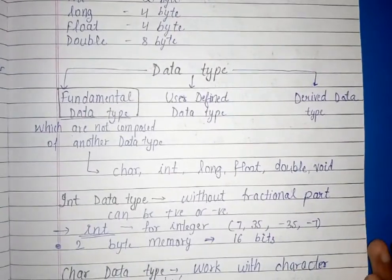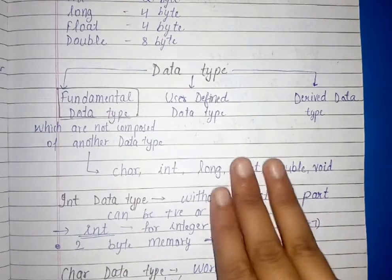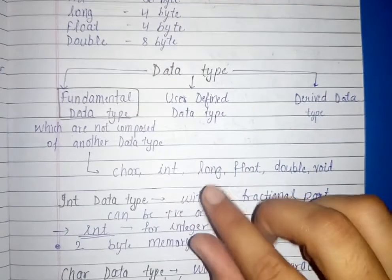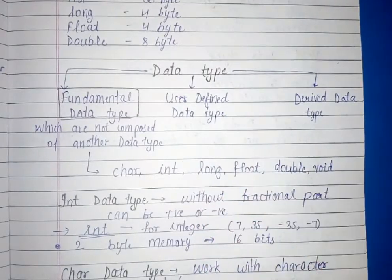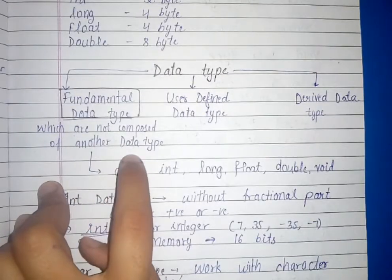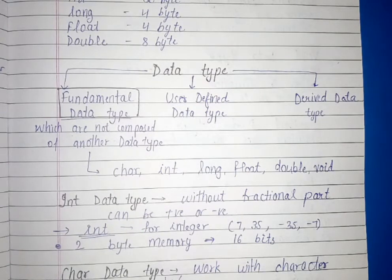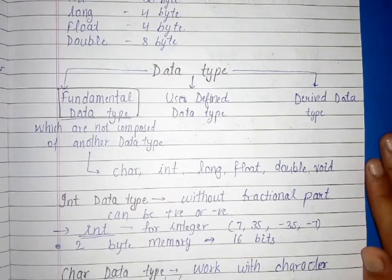What are the types of data types? There are three types. First is fundamental data types. The fundamental data types, which are not composed of another data types, they are only aware of themselves, and they are not made from another data types.